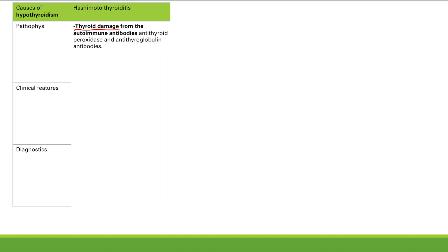These are anti-thyroid peroxidase and anti-thyroglobulin antibodies. These antibodies attack the thyroid gland and damage the tissue, resulting in decreased release of thyroid hormone — and now you have hypothyroidism.